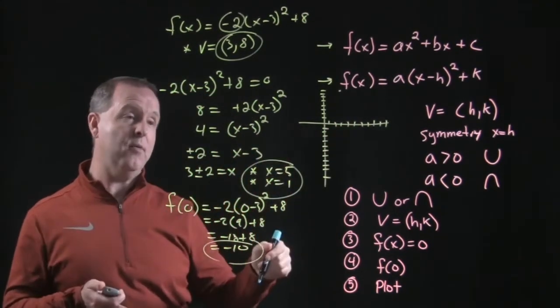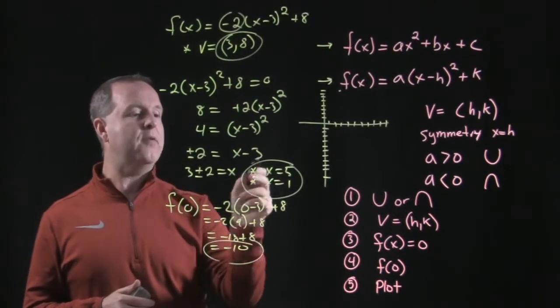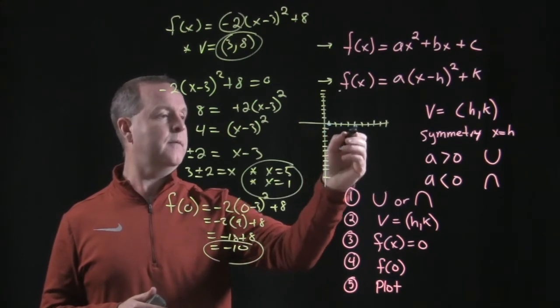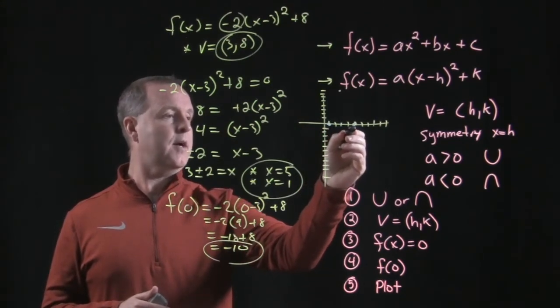We know that it goes down. We found out that it crosses the x-intercept at 5 and 1. So it's going to cross right there, and it's going to cross right there.